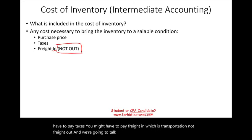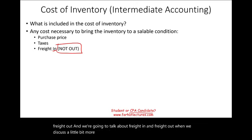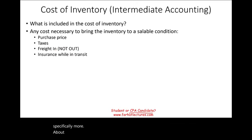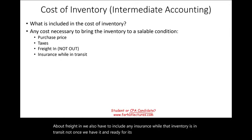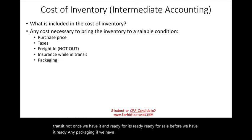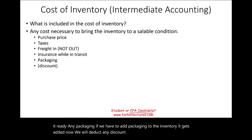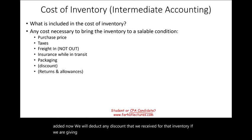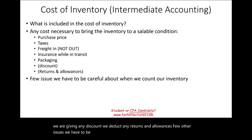We're going to talk about freight in and freight out when we discuss FOB shipping and FOB destination, specifically more about freight in. We also have to include any insurance while that inventory is in transit — not once we have it and ready for sale, but before. Any packaging we have to add to the inventory gets added as well. We will deduct any discount received for that inventory and deduct any returns and allowances. When you count the inventory, you have to assign a cost.